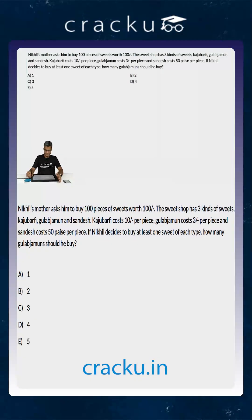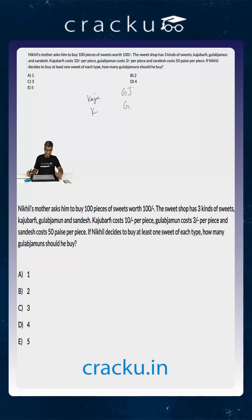In this question, we have Nikhil's mother who asked him to buy 100 pieces of sweets worth 100 rupees. There are three types of sweets that Nikhil can buy: Kaju Barfi, let us assume he buys K of them; Gulab Jamun, let us assume he buys G of them; and Sandesh, let us assume he buys S of them. The value of K plus G plus S is equal to 100, because the total number of sweets he purchases is 100.